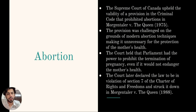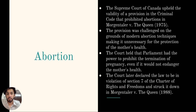The case of Morgentaler v. The Queen dealt with the validity of a provision in the Criminal Code that prohibited abortions except those approved by a hospital's therapeutic abortion committee. The Supreme Court of Canada upheld the criminal law power of parliament to prohibit termination of pregnancy even if the termination would not endanger the mother's health. This was in 1975.